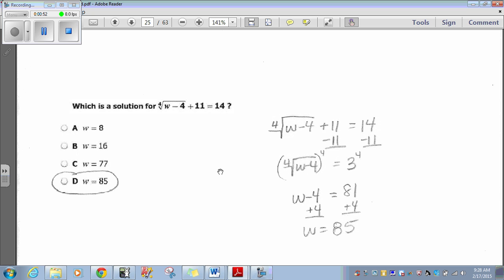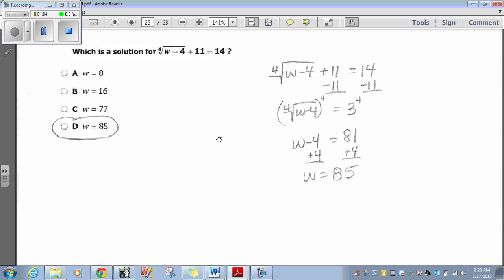Let's plug it in and see if that works. So 85 minus 4 is 81. The fourth root of 81 is 3. 3 plus 11 is 14. Choice D. Obvious answer. Boom. Let's go on.